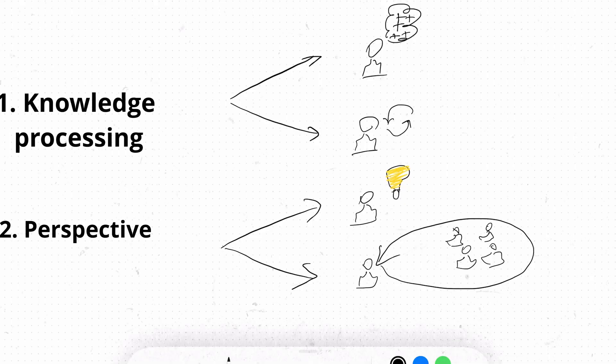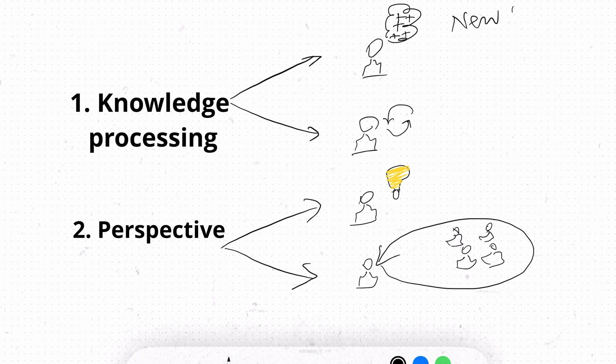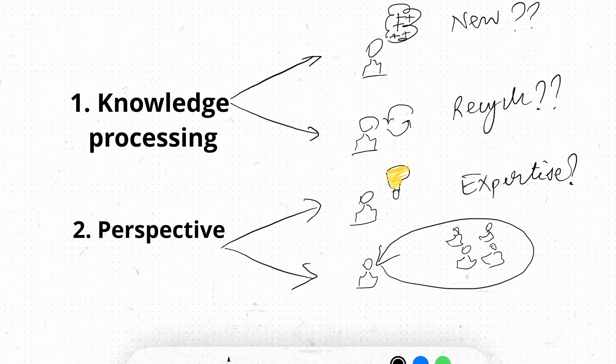That research used a tool called the AEM Cube, designed by a psychiatrist and a business consultant. It assesses two schools of thought: knowledge processing and perspective. Knowledge processing is the extent to which individuals generate new ideas versus recycling previous experiences. Perspective is about whether you apply your own expertise or consolidate ideas from team members. Tackling a new challenge requires a balance between applying what we know and discovering what we don't — that is cognitive diversity.